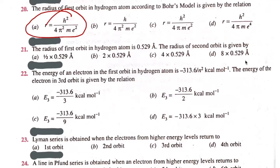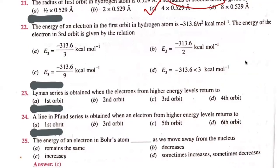The radius of the second orbit — option C. Discussion on options: option B and option C, with values minus 3, 1, 3. The energy of the atom in the third orbit is discussed.